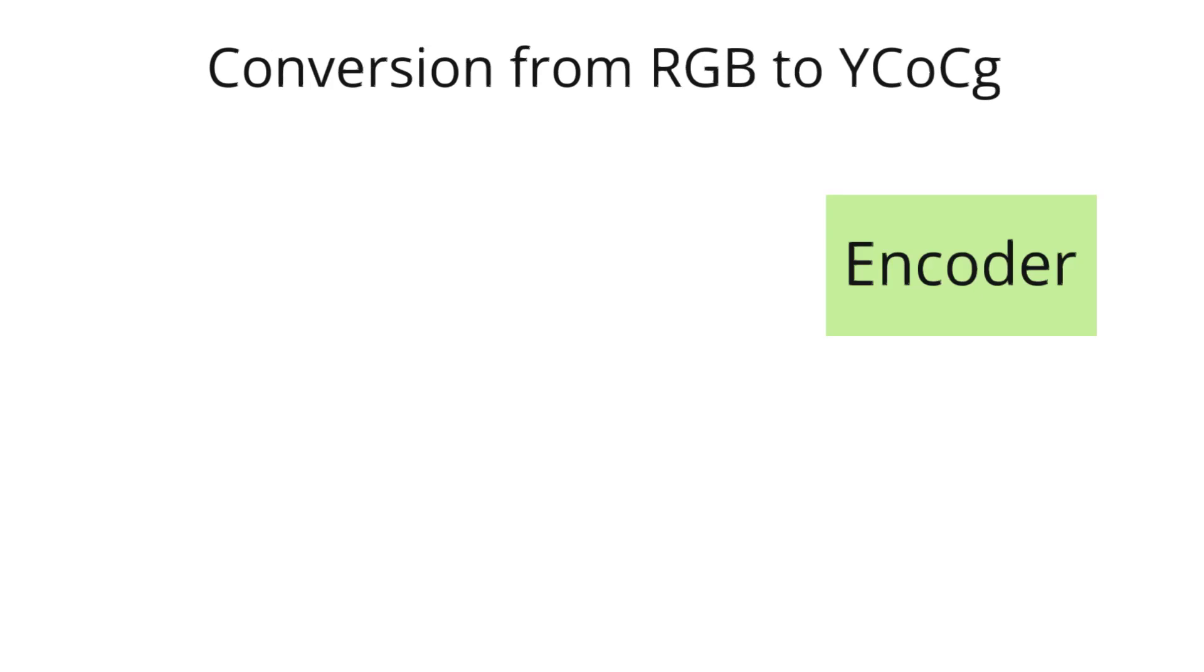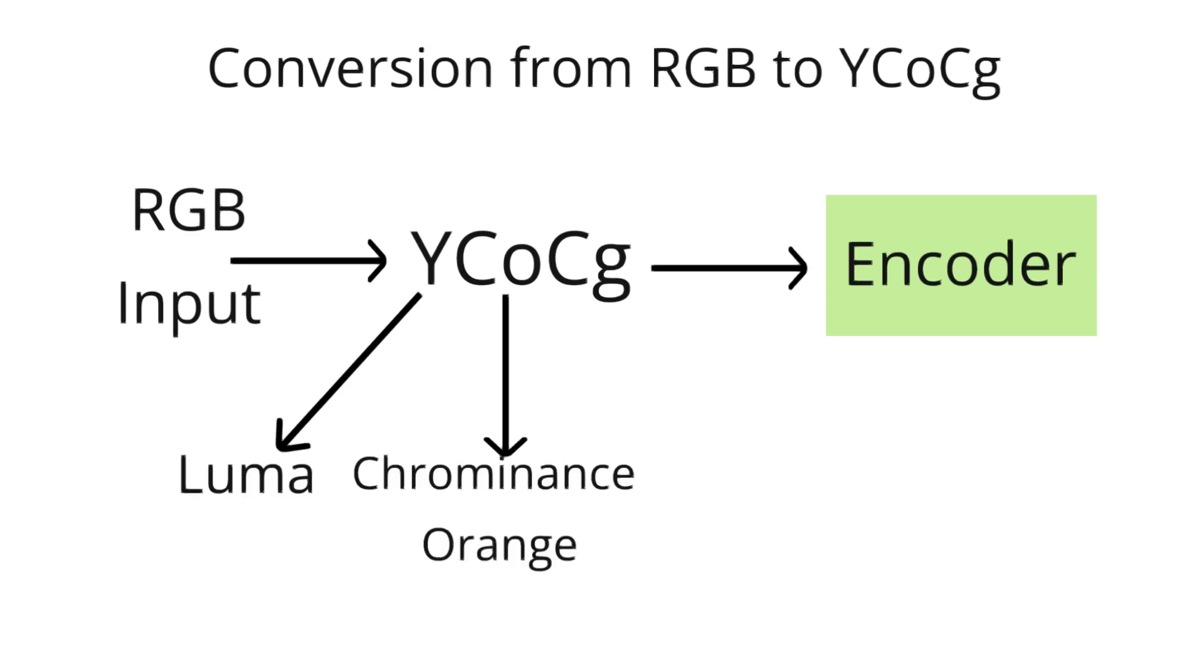When encoding video using VESA-DSC, RGB input, which is a common color space for video and images, is first converted into a different color space called YCOCG. YCOCG stands for luma, chrominance orange, and chrominance green. This conversion is performed before any other processing.